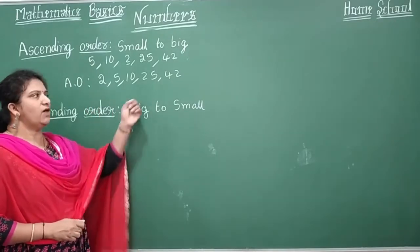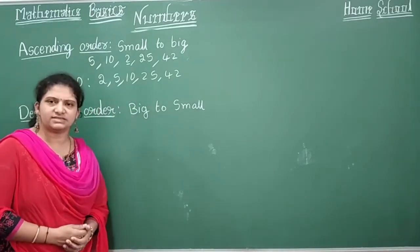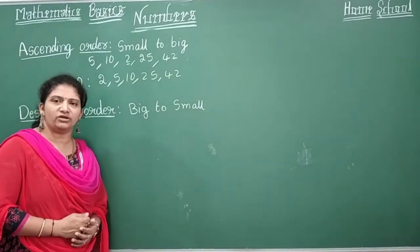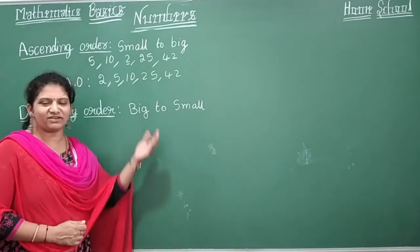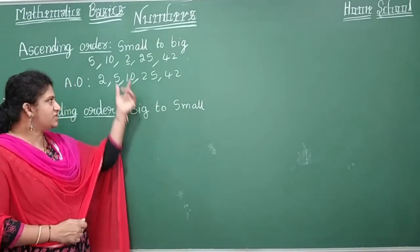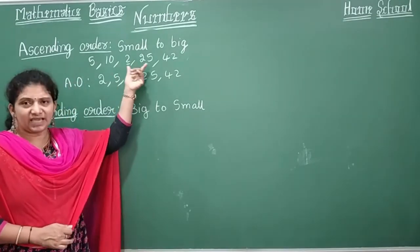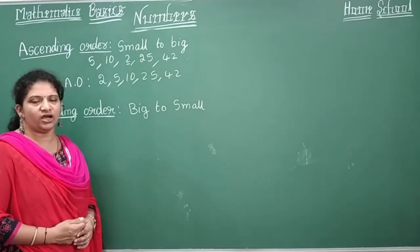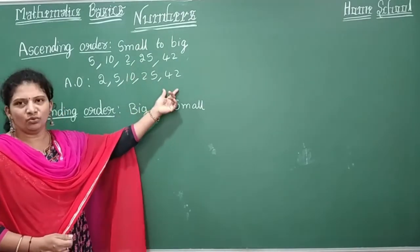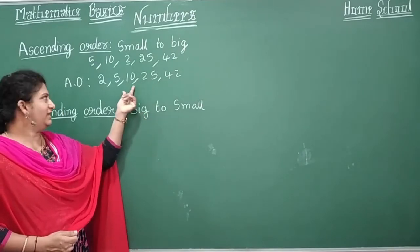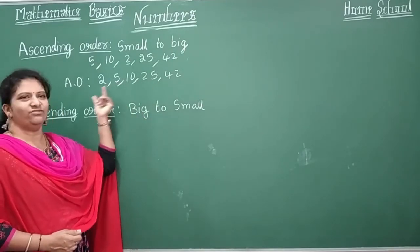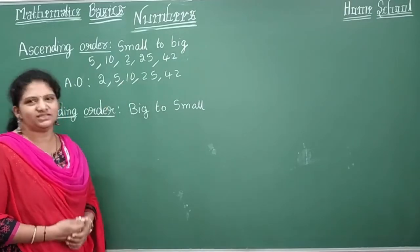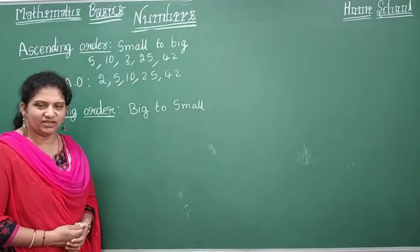So the ascending order is 2, 5, 10, 25, 42. That is the way we arrange numbers in ascending order. Now what is descending order? It is the arrangement from big to small — just the reverse of ascending order. Using the same example in descending order: 42, 25, 10, 5, 2. This is ascending order and this is descending order.